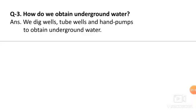Question 3: How do we obtain underground water? Children, obtain means get. So our answer is: We dig wells, tube wells, and hand pumps to obtain underground water.